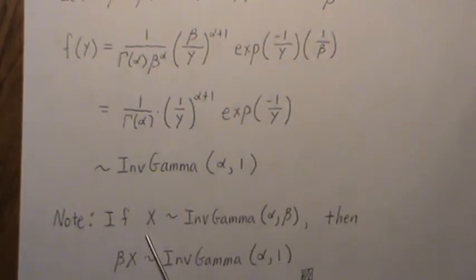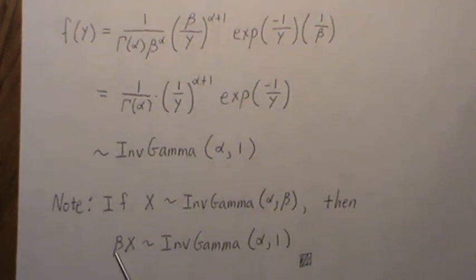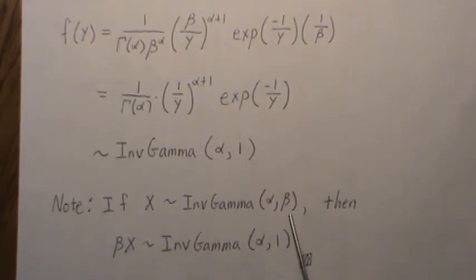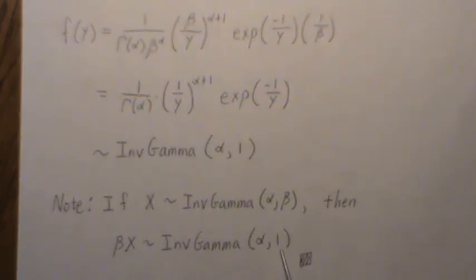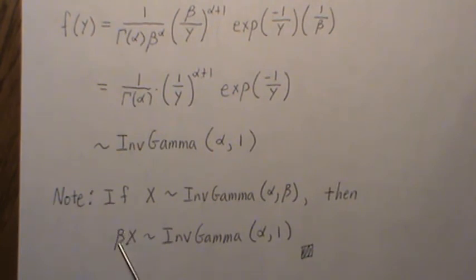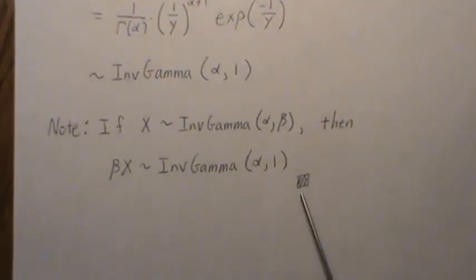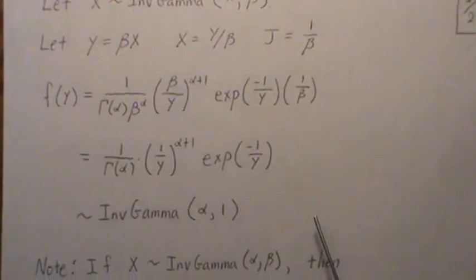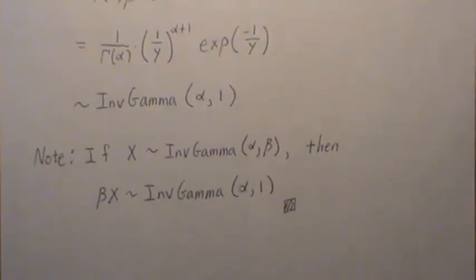So the take-home message is if X is an inverse gamma alpha beta, then a constant times it—you essentially divide this value here. So we're taking beta divided by beta which is 1, but if this were K then it would be beta over K. And again I'm going to point back and reference this video in later videos.